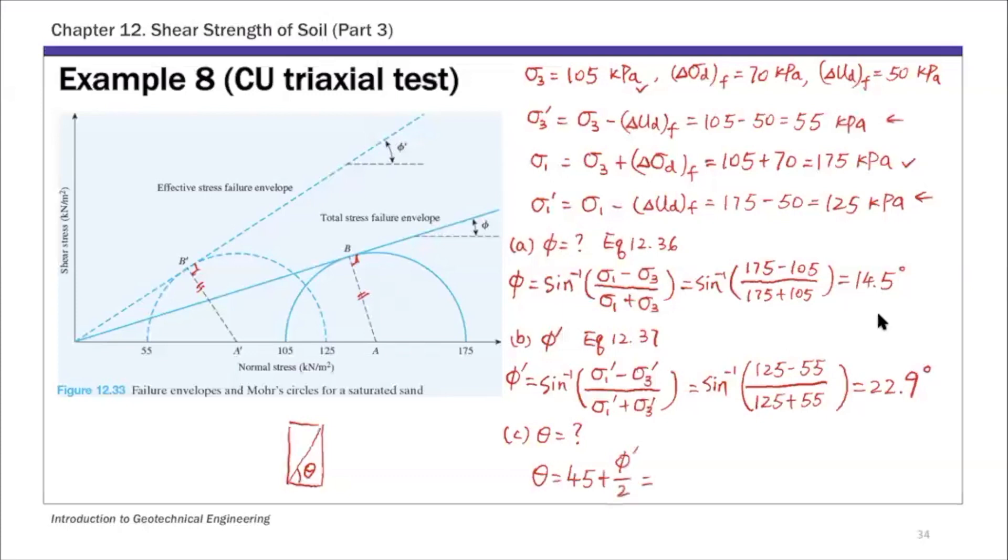As we just mentioned, this is the effective stress angle that controls failure in the specimen, so you want to plug in the correct friction angle, phi prime. That's 45 plus 22.9 over 2, and the failure plane theta equals 56.4 degrees. That's the CU triaxial test example.